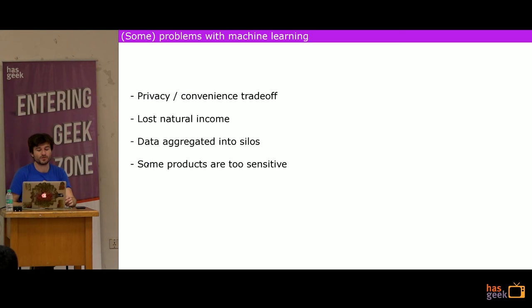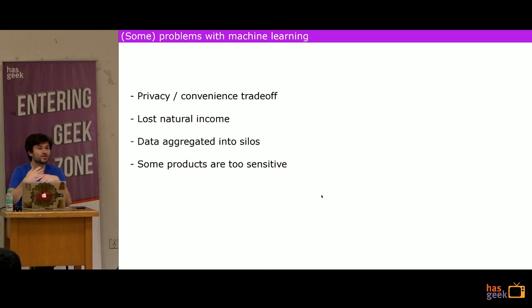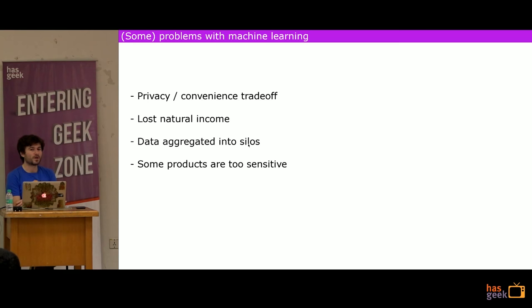The fourth problem, related to privacy, is that some products companies would like to provide involve very sensitive data. For example, companies would like to monitor your health and warn you of potential problems, but there's a disincentive to share that about yourself because you're afraid it might be used against you — which it often is. This creates a very inefficient and suboptimal model of interaction between customers and AI.